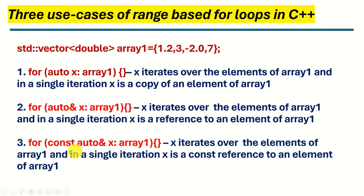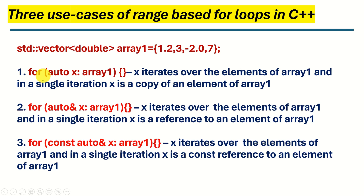Here's case 3. We write 'for', then 'const auto&', then x, then array1. x iterates over elements of array1 and in a single iteration x is a const reference to an element. The advantage of case 3 over case 1 is that x is a const reference so no copy constructor is called. If we want to print the entries of array1 we use this approach since it's more efficient than approach 1. That's a brief summary of the 3 most common use cases — there are more, but these are the most important. Next we'll write the code.